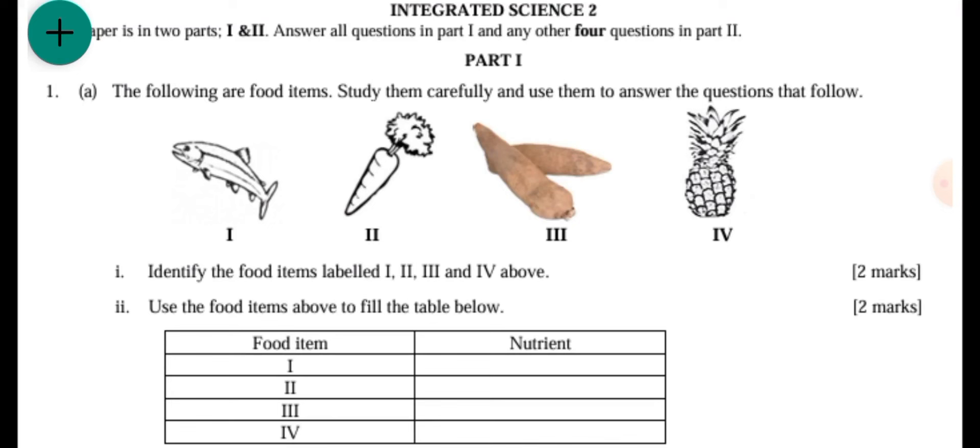We have identified the food items labeled I to IV. I is a fish, II is carrot, III is yam, and IV is pineapple.